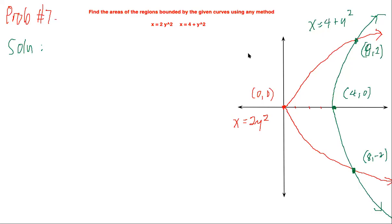In problem number seven, we will be solving for the areas of the regions bounded by the given curves using any method, either vertical or horizontal rectangular strips. The curves given are x = 2y² and x = 4 + y².